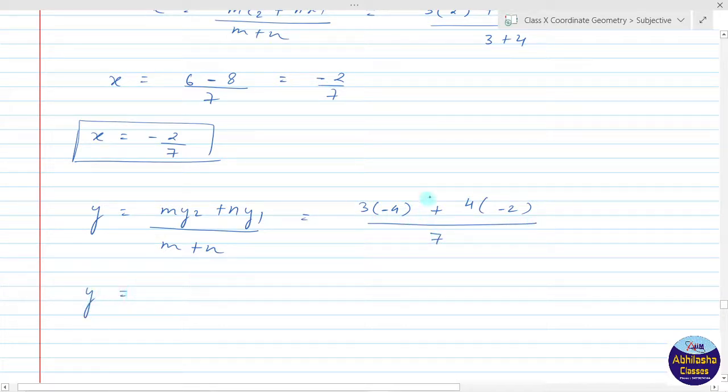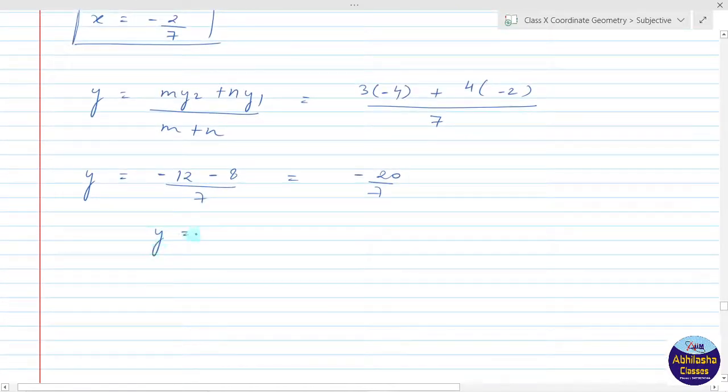y equals 3×(-4) = -12, and 4×(-2) = -8, over 7. So we get y = (-12 - 8)/7 = -20/7.